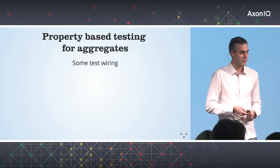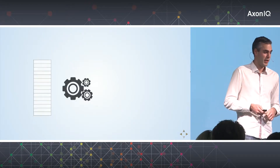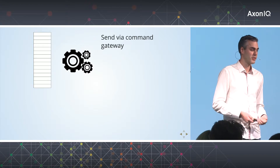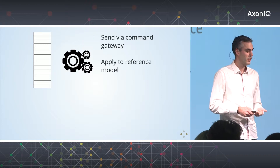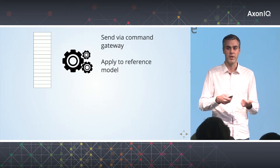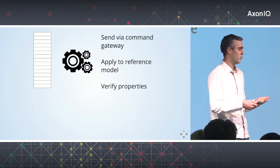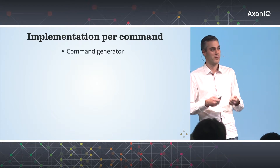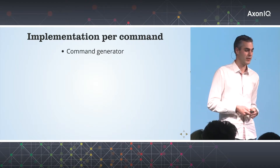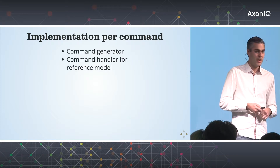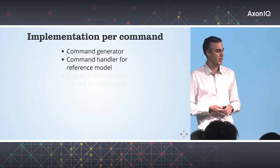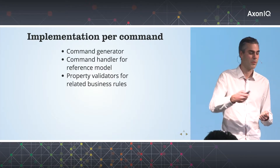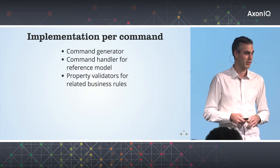Of course, you have to do some wiring to set up property-based testing this way. Given the generated list of commands — the scenario — what I need to do is first send each command via the command gateway, apply it to some rules that update my reference model, and then verify the properties by making calls to the query side of my application. Per command, I need a command generator, a handler that updates my reference model correctly, and for every business rule related to my command, a validator that checks the query side and my reference model to see if the system is still in a consistent state.